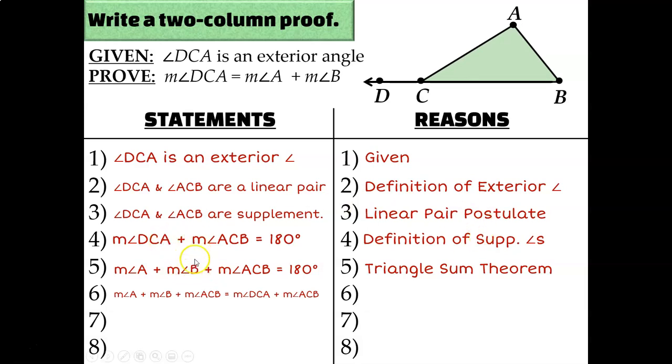I just set these two things equal to each other because they were both equal to 180. You could either say that's the substitution property of equality, or you could also use transitive here.